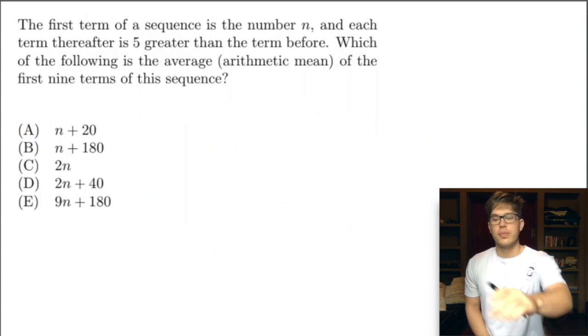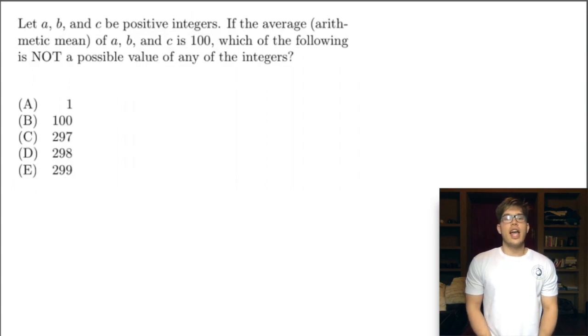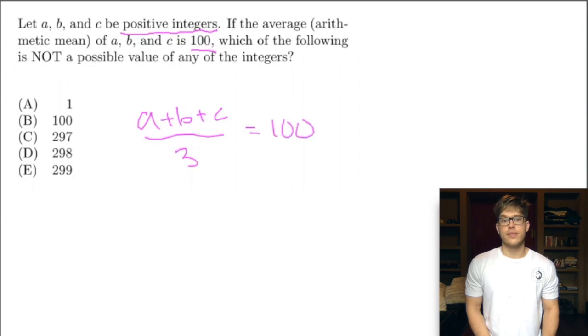Let's go on to the next problem. Let a, b, and c be positive integers. If the average arithmetic mean of a, b, and c is 100, which of the following is not a possible value for any of these integers? We're told that a, b, and c are all positive integers and the mean is 100. So we know that a plus b plus c divided by 3 equals 100. So we know a plus b plus c must equal 300.